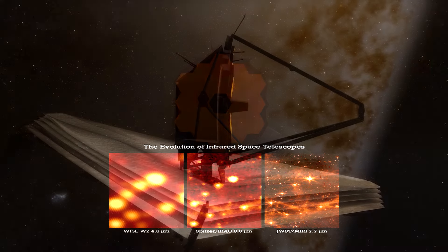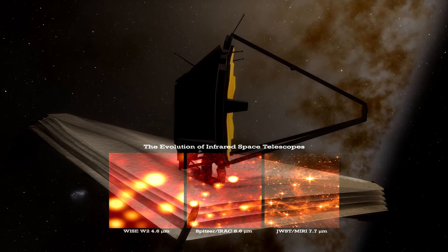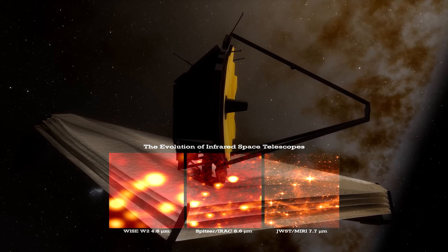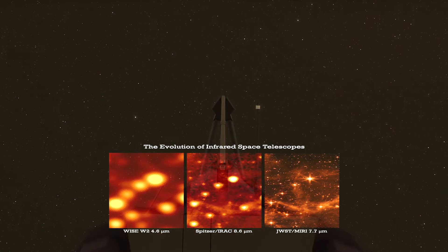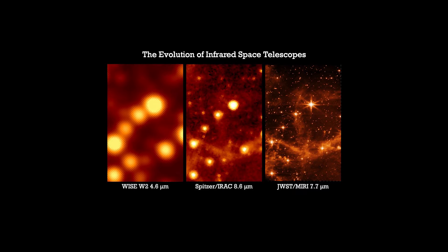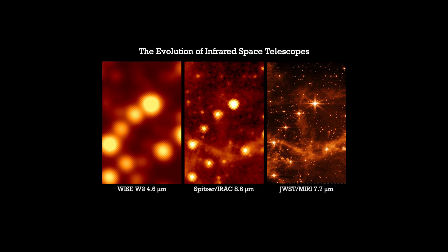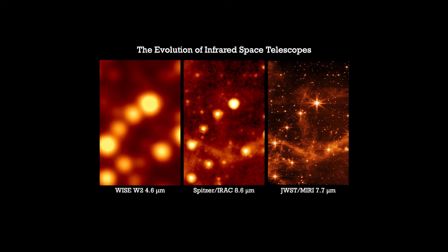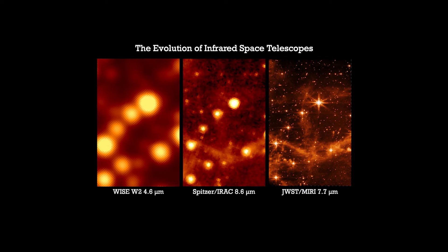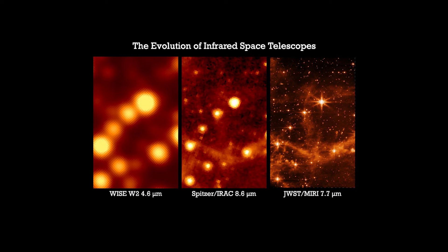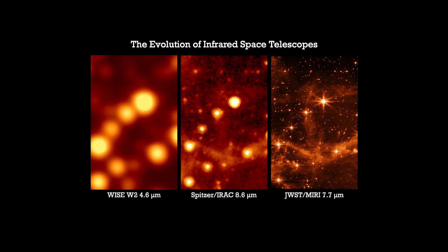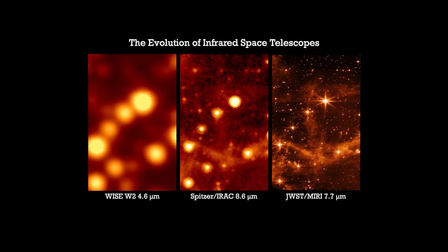Although the images produced by Weiss, Spitzer, and Webb represent the same region of the sky, they could not be more different in terms of quality and detail. Although the Weiss image shows merely a diffuse collection of points of light, we can at least make out something resembling individual structures. In contrast, the image captured by Spitzer shows us the sky more clearly, finally revealing its true glory.